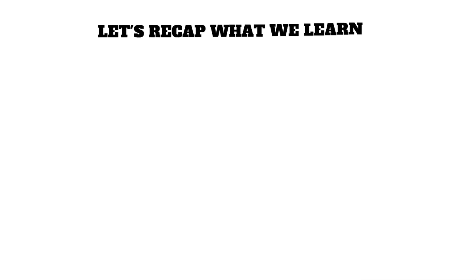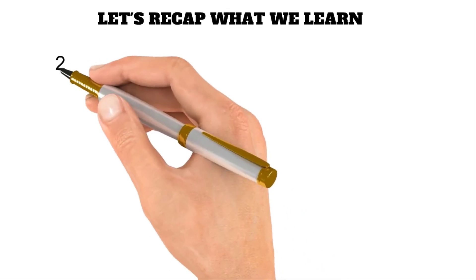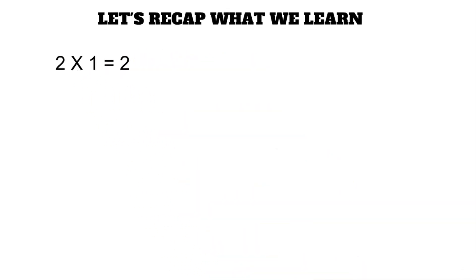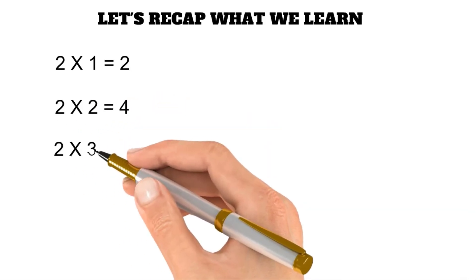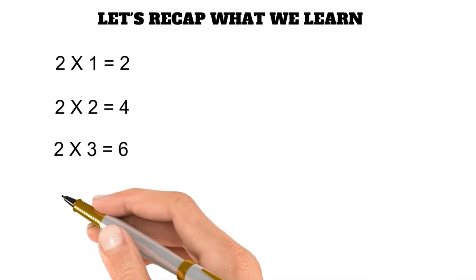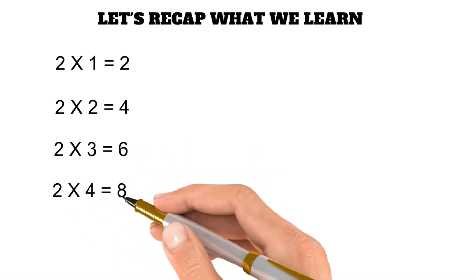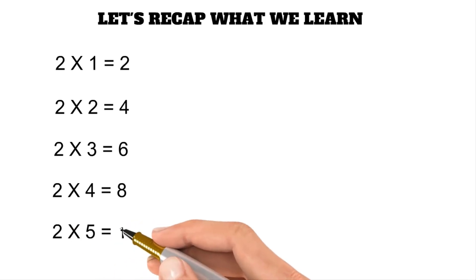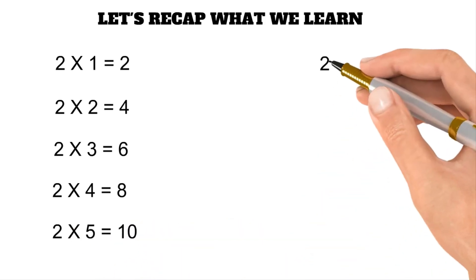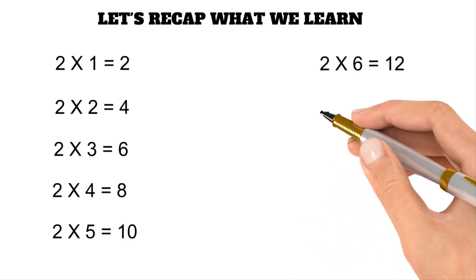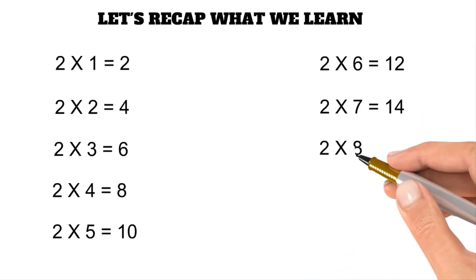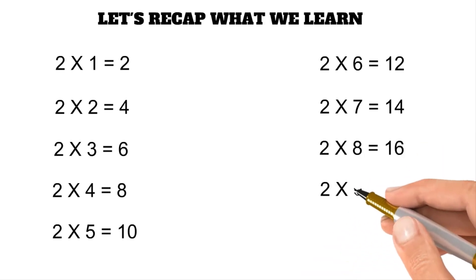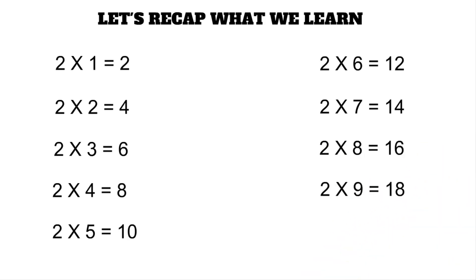Let's recap what we have learned so far. Two times one is two. Two times two is four. Two times three is six. Two times four is eight. Two times five is ten. Two times six is twelve. Two times seven is fourteen. Two times eight is sixteen. Two times nine is eighteen. Two times ten is twenty.